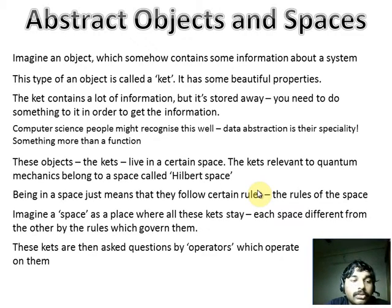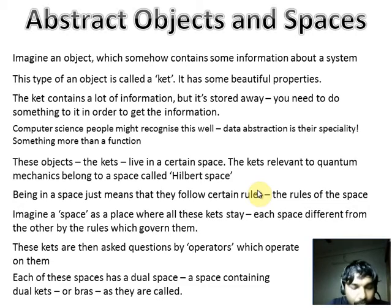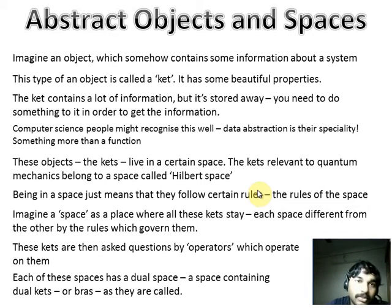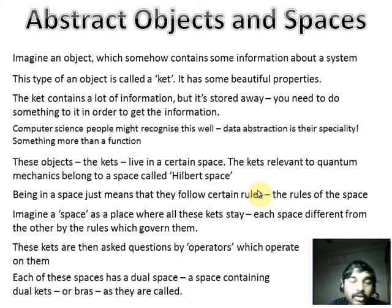Along with the kets, there are things called operators, and operators operate on the kets. These spaces which contain the kets also have a dual space — every space has a dual space, and the dual space is just as big as the space, containing the same number of objects. The kets in the dual space are called dual kets, or they're called bras — so we have the bra-ket notation.